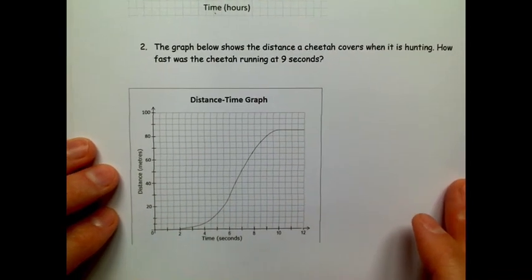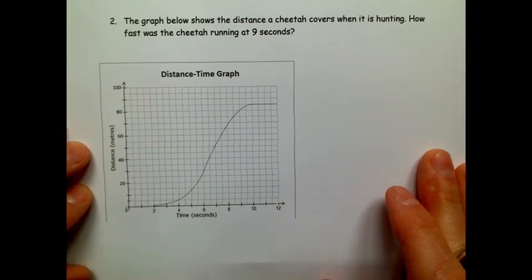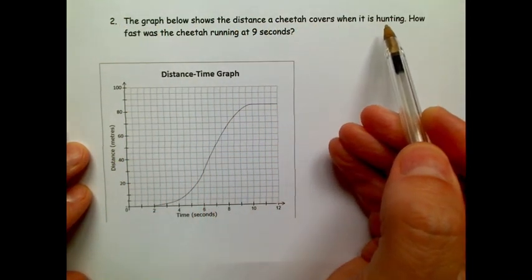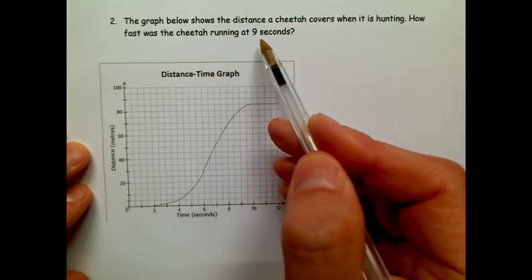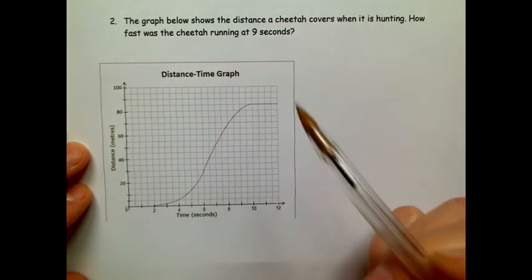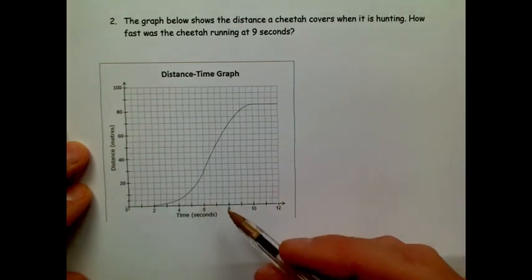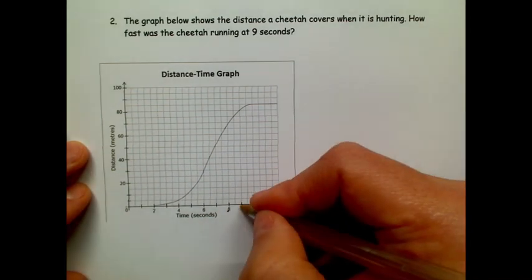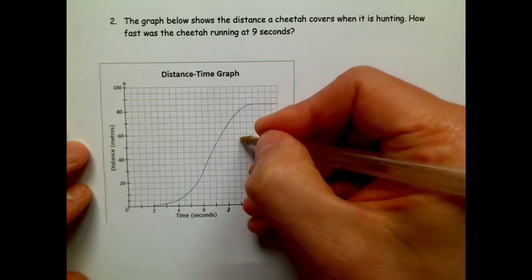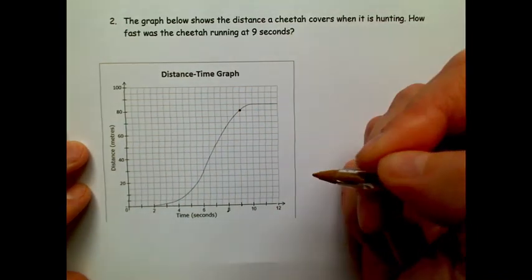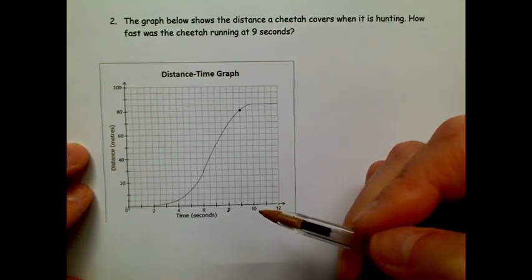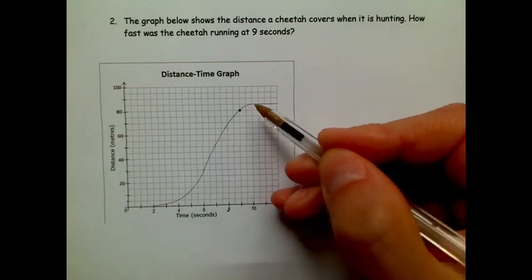Moving on to question number two then. It says the graph below shows the distance a cheetah covers when it is hunting. How fast was the cheetah running at 9 seconds? So I don't want an average for an entire part of the journey—I'm looking at a very particular point. So I need to find 9 seconds. There's 8 and 10, so 9 falls in the middle. So I just run my way up—that is 9 seconds there. And you can see that that is on a curved part of the graph.